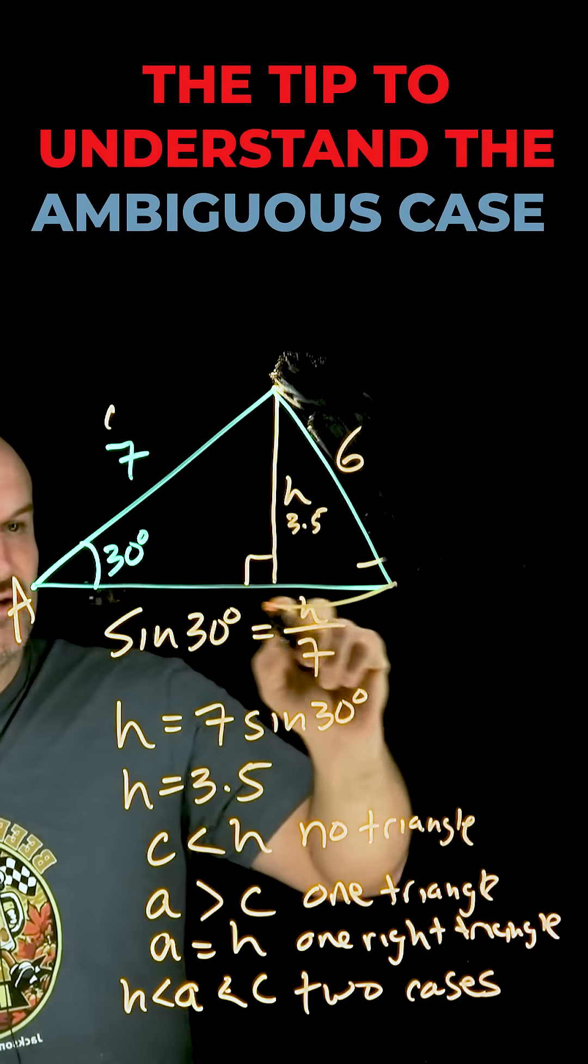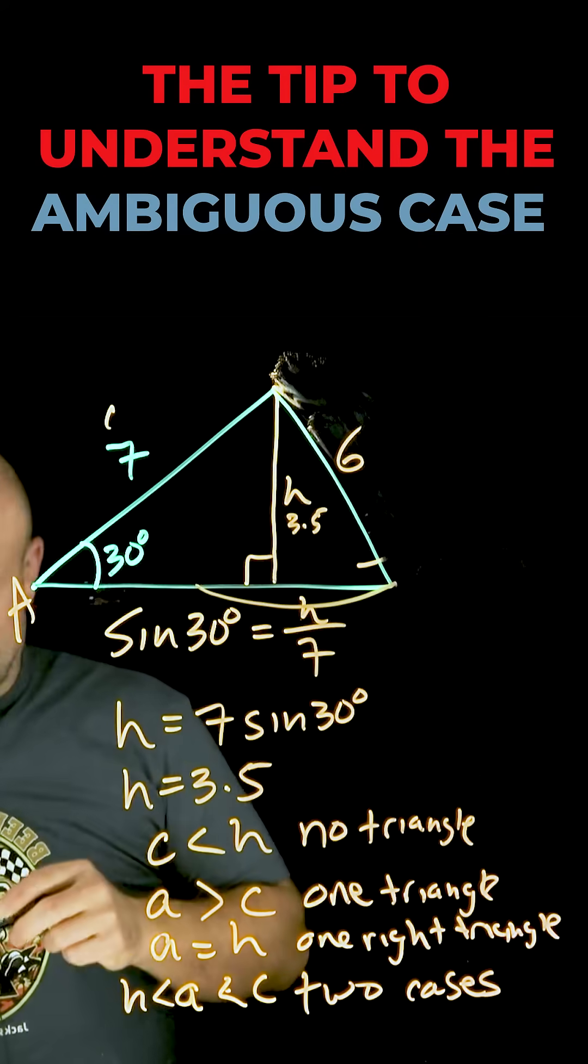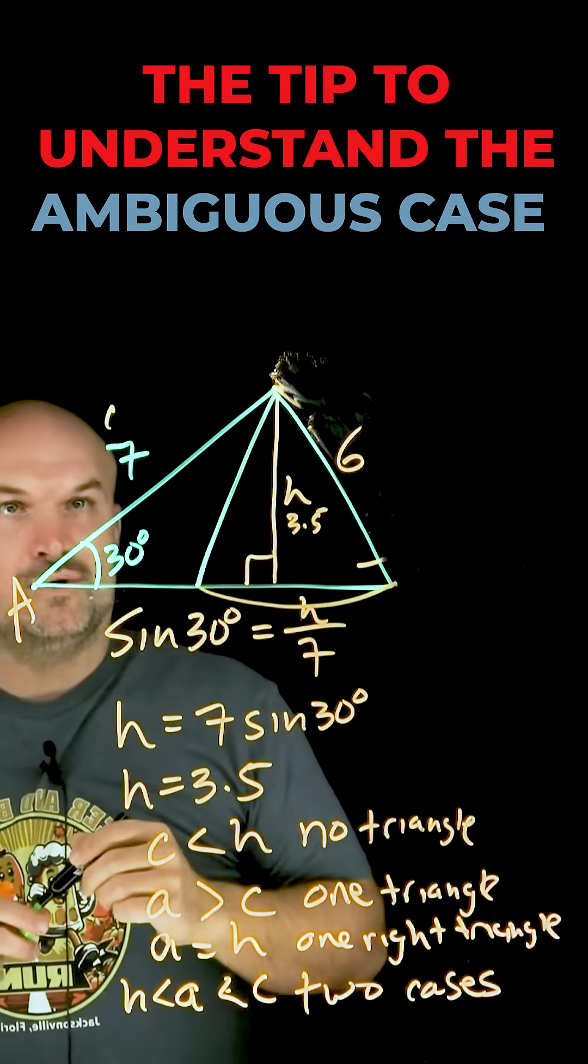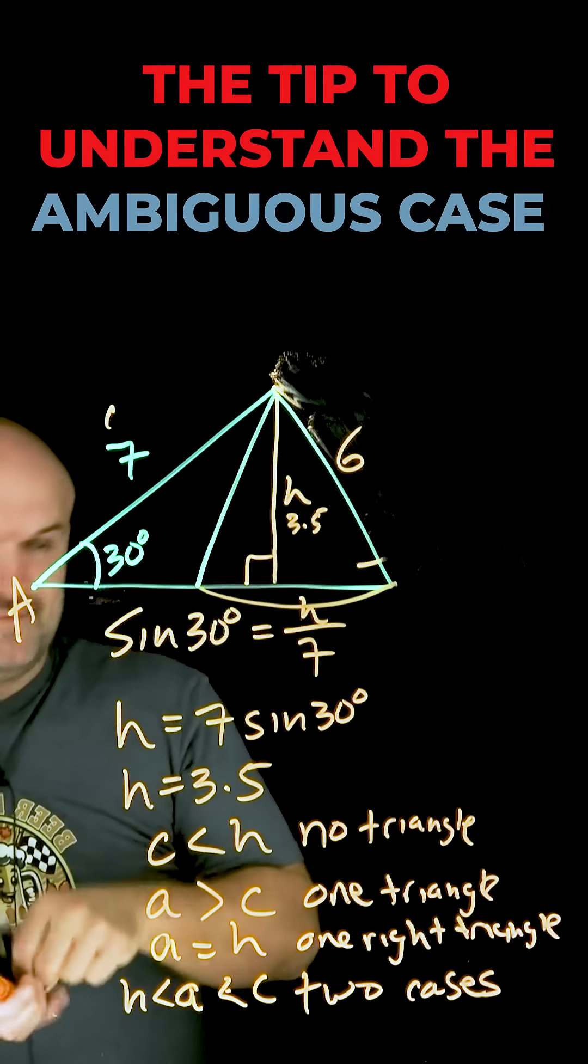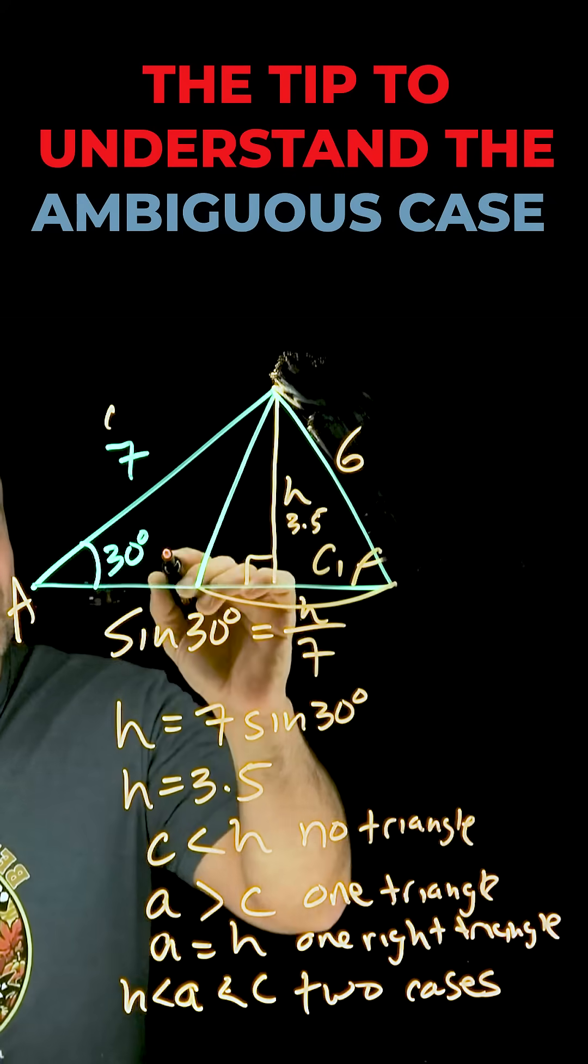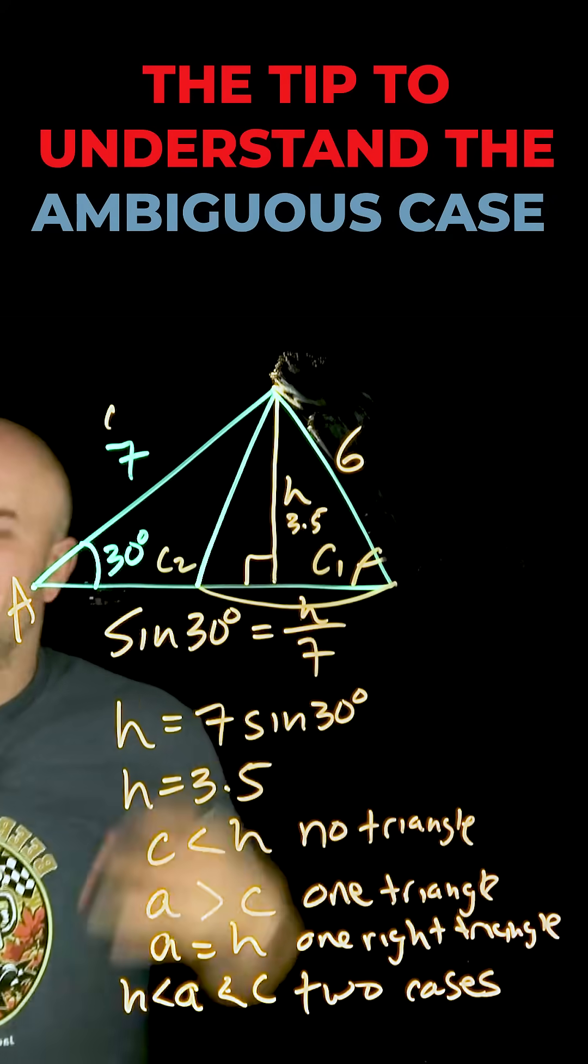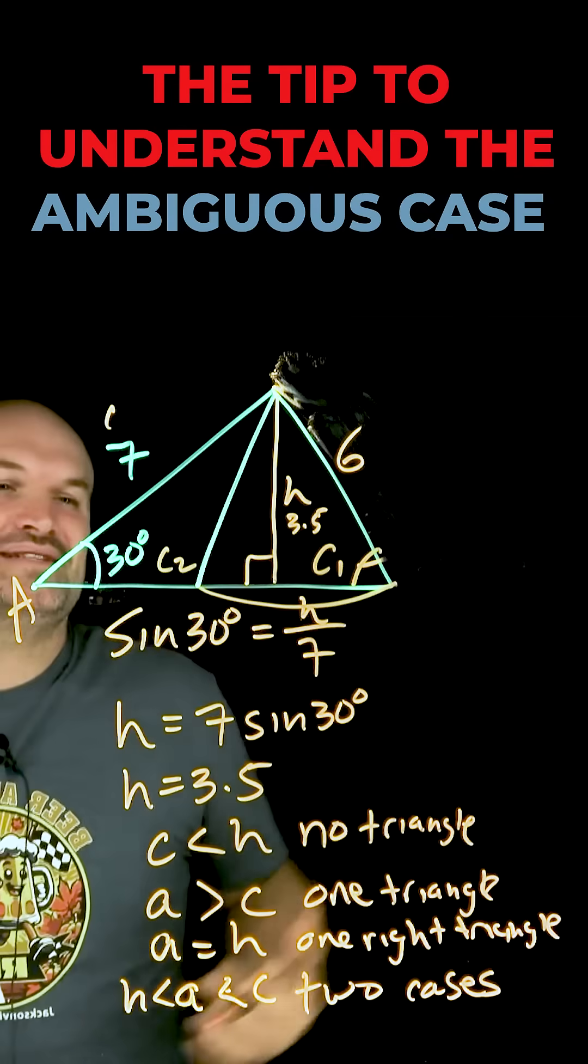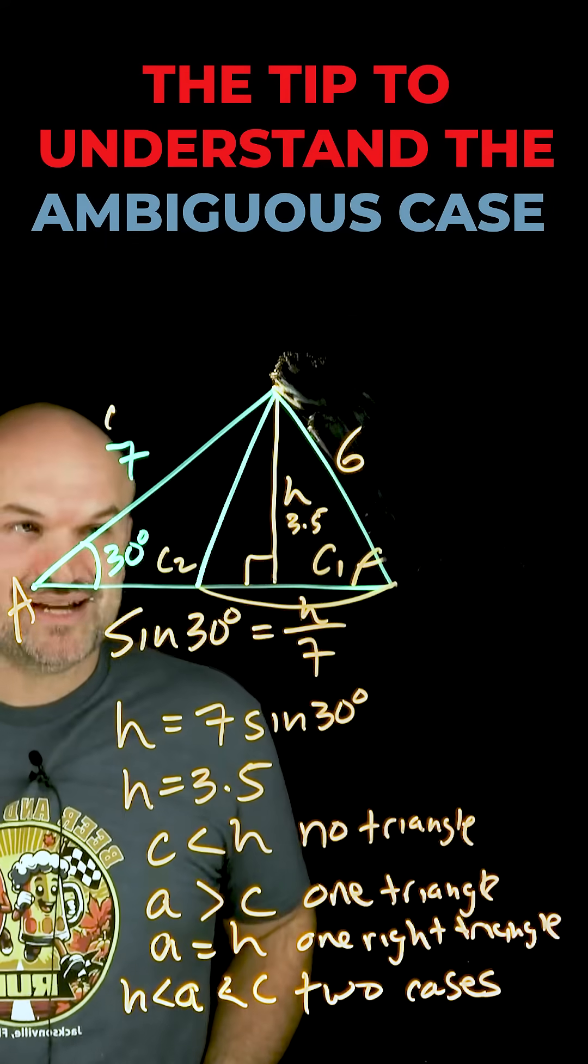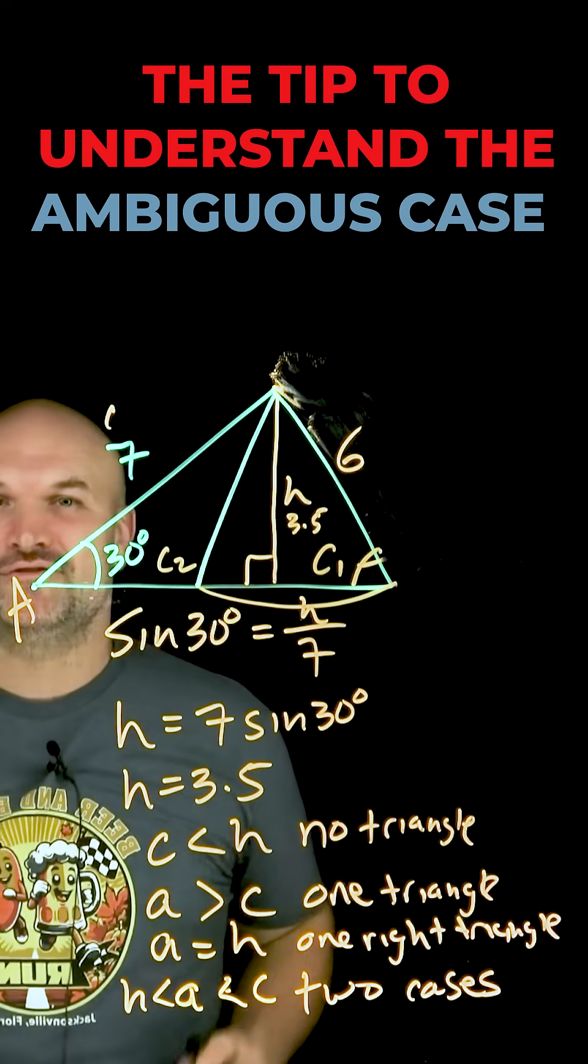Because now this triangle can look like this. This side can rotate to create another triangle, which would be right here. So if this is my small side C, this would be my big side angle C1, and this would be my angle C2. And that's where people hate the ambiguous case, because now we don't have enough information to know which triangle is which. So we need to be able to solve for both triangles.